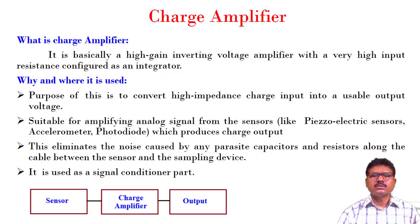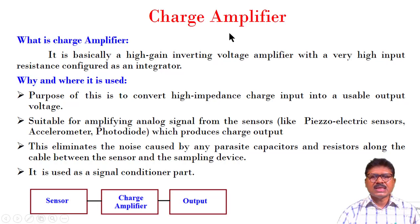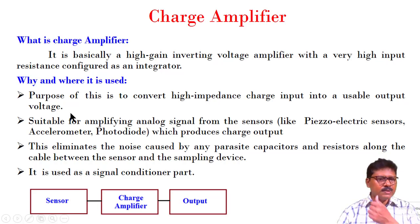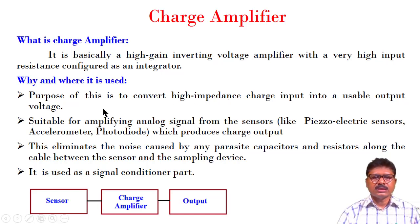So why is it used? It is used with transducers that have charge as output; that charge is amplified and ultimately the output of this amplifier is a voltage. So the input of the charge amplifier is charge, and we can call this a charge-to-voltage converter. The purpose is to convert a high impedance charge input into a usable output voltage. Input impedance is very high and the output is a suitable voltage. Examples of sensors include the piezoelectric sensor, accelerometer, and photodiode — all of which produce a charge output.